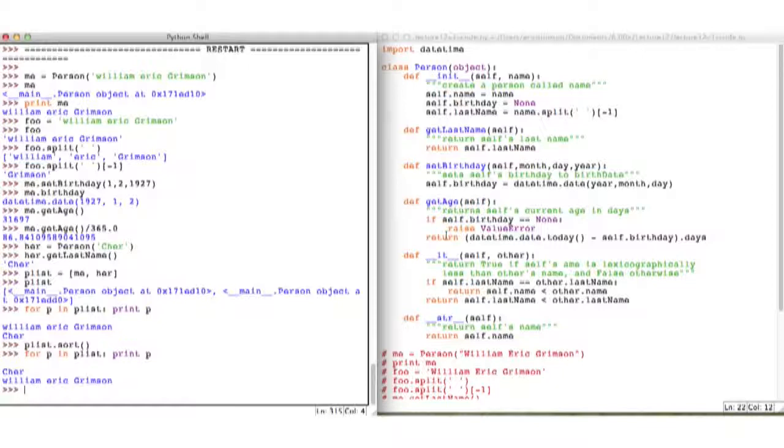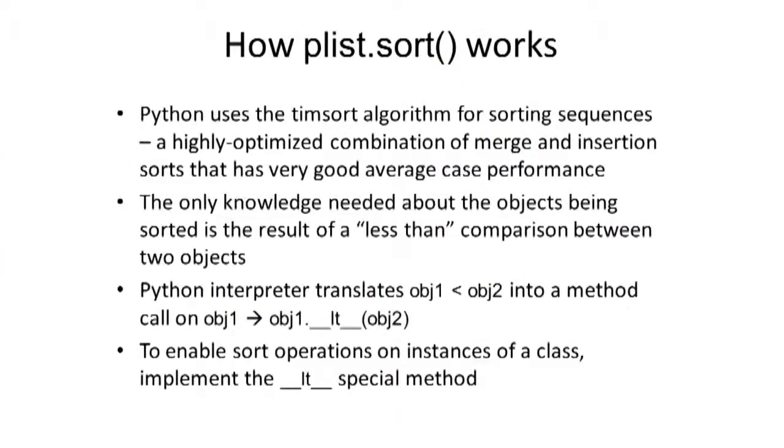Okay. So, wait a minute. What's that sort thing doing? I said, I got a list and I'm sorting it. And it kind of did what I'd like it to do, but how does it actually do that? Well, here's how plist.sort works.